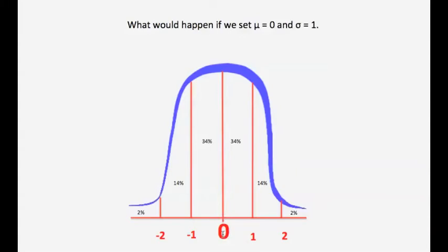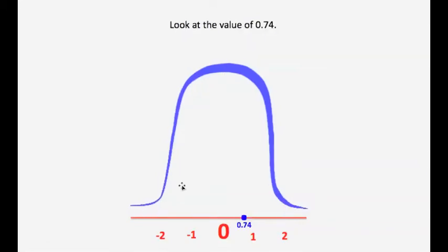When we do that, here is the mean. Here is one standard deviation below — notice the negative indicates that it is below the mean. Here's two standard deviations below, and these are of course positive. You don't write the positive symbol, but it's there. One standard deviation above the mean, and two above the mean. Now let's look at a value such as 0.74. This value is a data point given in the number of standard deviations that it lies from the mean.